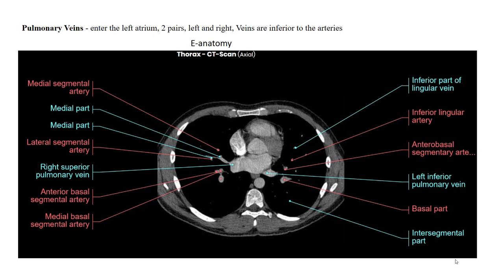Just inferior to the pulmonary arteries are the pulmonary veins. After the blood gets oxygenated in the lungs, it comes back through the right and left pulmonary veins. Here we're catching the right superior pulmonary vein and the left inferior pulmonary vein, because they don't sit at exactly the same horizontal level in the body — they are just slightly askew. The right superior and the left inferior pulmonary veins are at about the same level, and it also depends on how the patient is positioned in the scanner. Here are the pulmonary veins coming back into the left atrium before it goes into the left ventricle.